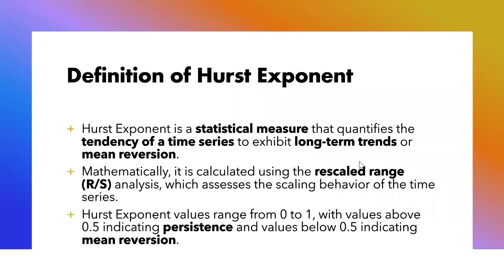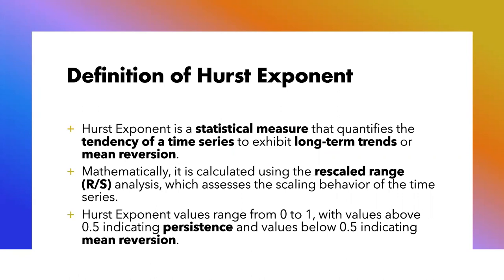The definition of the Hurst Exponent is a statistical measure that quantifies the tendency of a time series to exhibit long-term trends or mean reversion. What we mean by long-term trends is basically a consistent price or value movement over a long period — it can be upward or downward. Investors consider these trends when allocating their assets or deciding to buy or sell stocks.